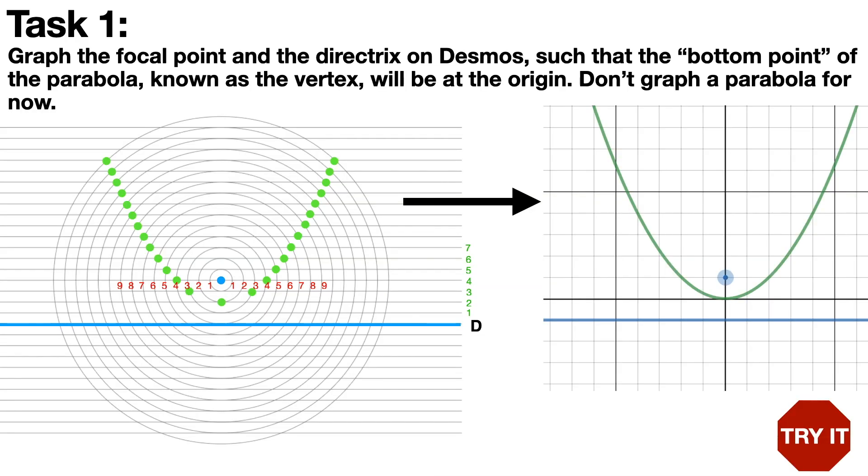The purpose of today's lesson is to be able to translate this geometric definition of a parabola into algebra. We'll be doing this in a series of tasks. The first thing I'm going to ask you to try to do is to graph on Desmos the focal point and the directrix. Try to have it so that the vertex of the parabola will be at the origin, but don't actually graph a parabola for now.